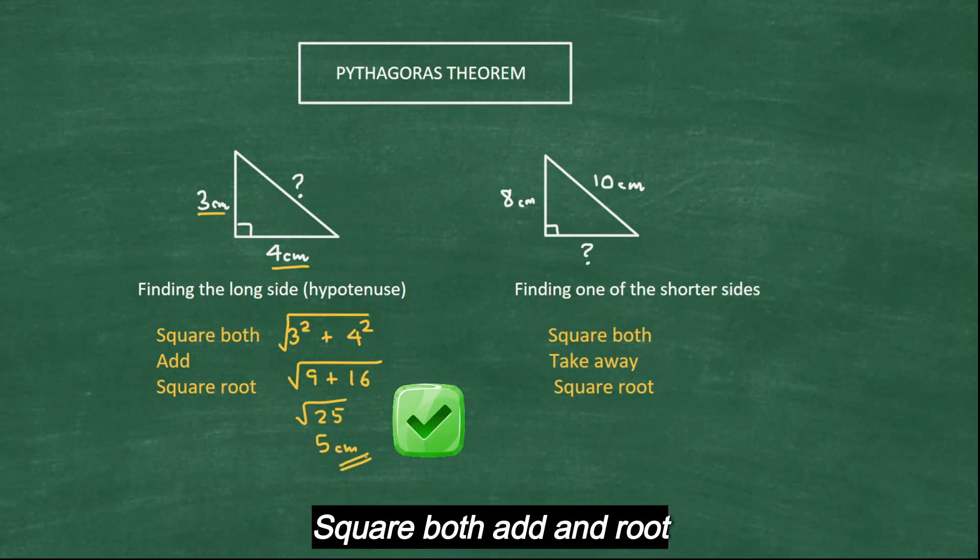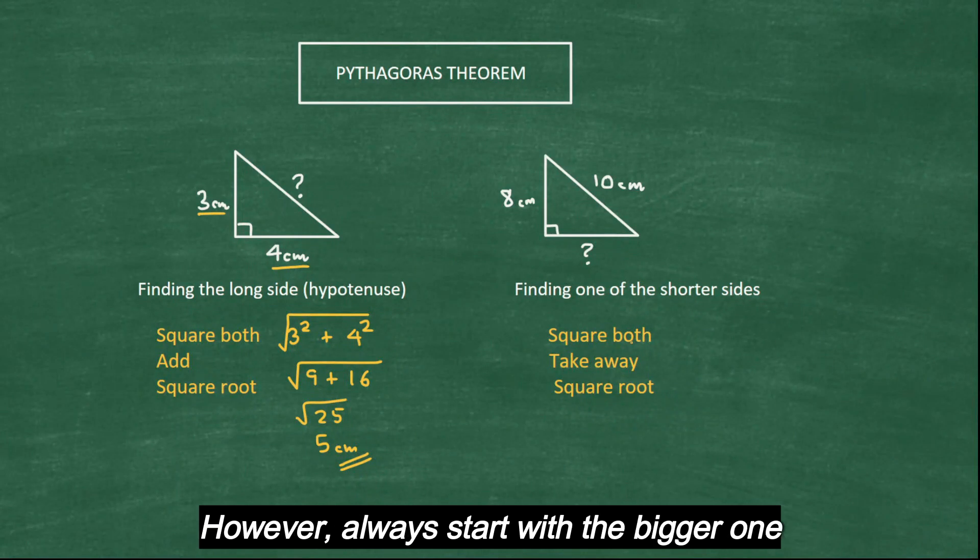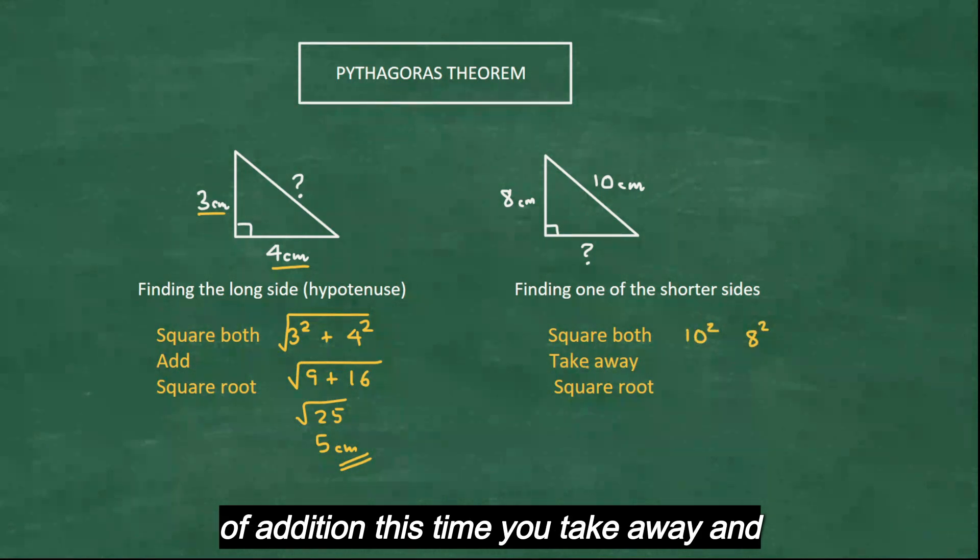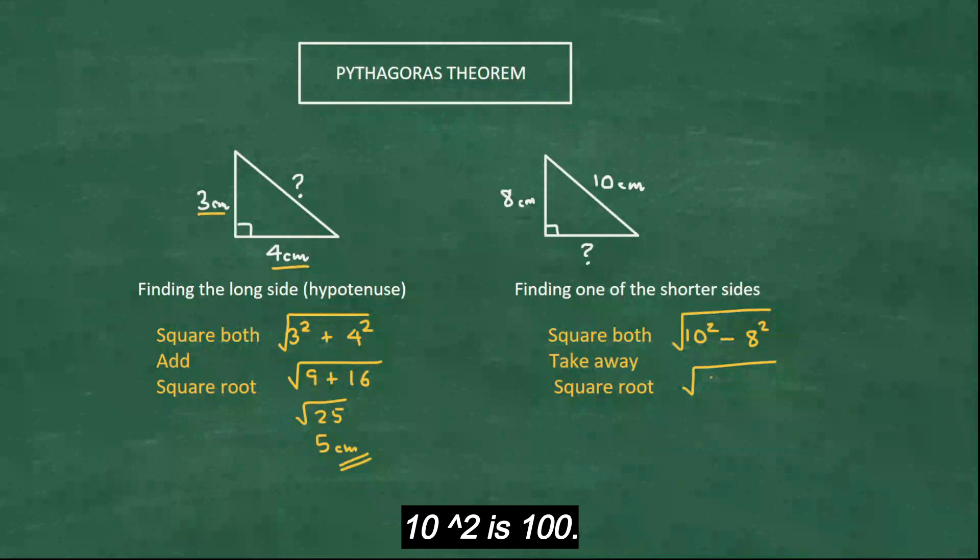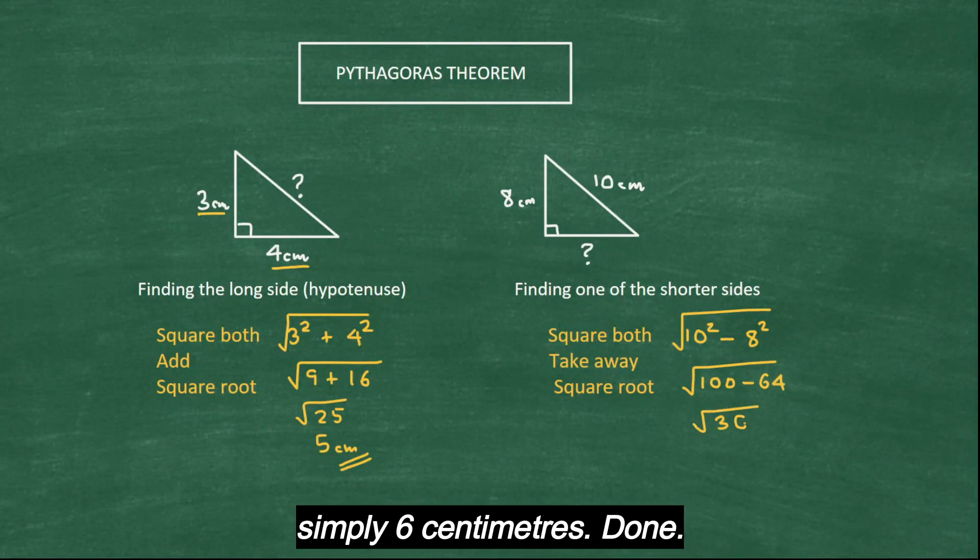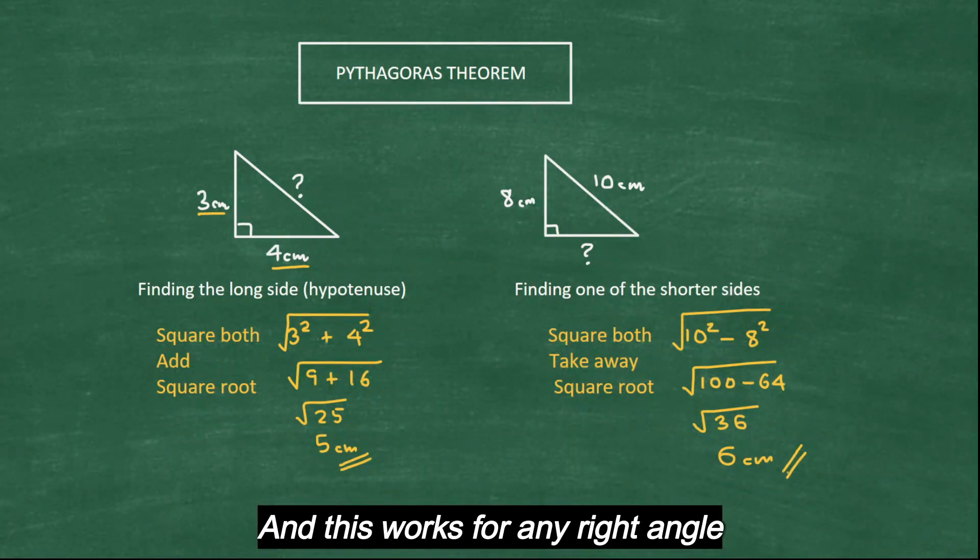Square both, add and root. If you are finding one of the shorter sides, what you do, you square both. However, always start with the bigger one. So the bigger one is 10. So 10², 8². Instead of addition, this time you take away and then square root. 10² is 100, take away 64, square root of 36 and your answer is simply 6 centimeters. Done. And this works for any right angle triangle.